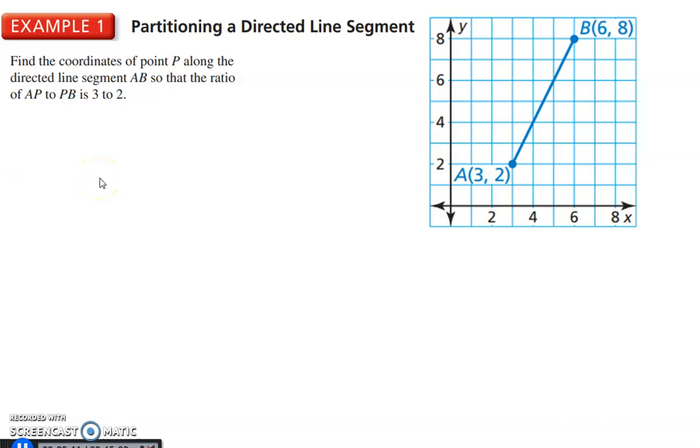First off, if you have a directed line segment, directed just means we're going in one certain direction. So in this case, we're going from A to B. From A to B, they want to split this up, so we have a ratio of 3 to 2. So if we want to split this segment into a ratio of 3 to 2, we have to have 5 parts. That's 3 plus 2. That makes 5 parts.